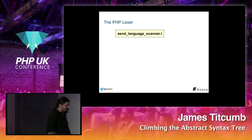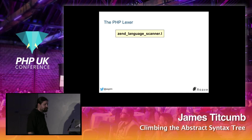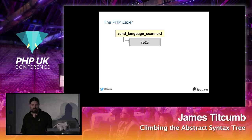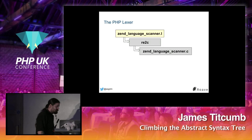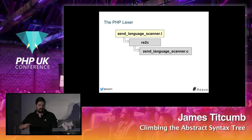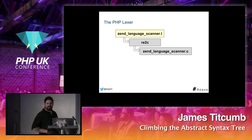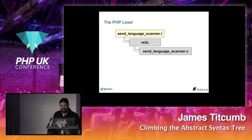We've lexed stuff. All we've done is broken up our long string of PHP code into lots of little tokens, perhaps with some meaningful information like variable names. We pass the syntax definition into RE2C and it generates a C file. You can check out the PHP source code and run RE2C on zend_language_scanner.l with appropriate flags to get the lexer implementation.